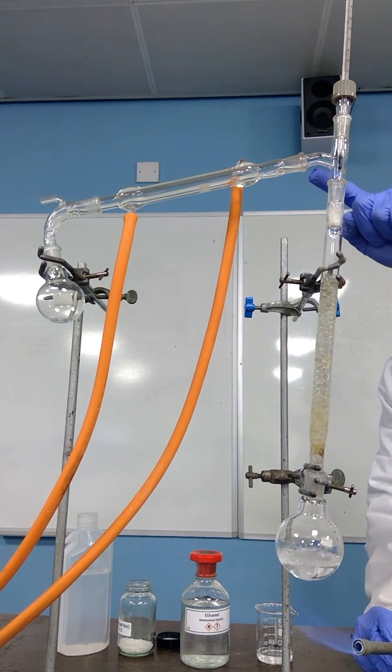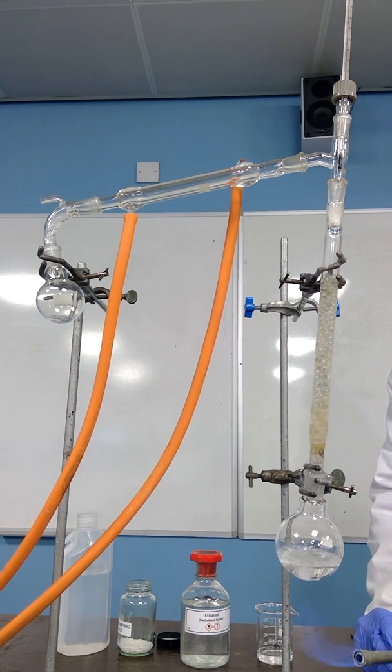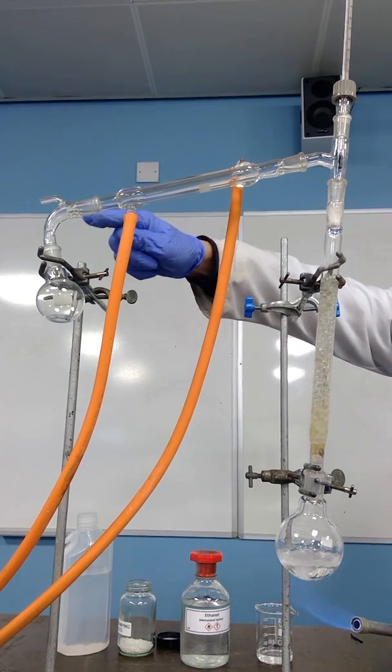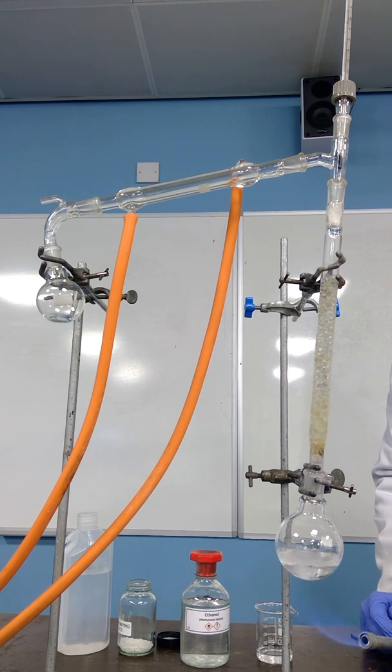Now the vapor then passes into the Liebig condenser and as it passes into the Liebig condenser it cools again because of the jacket of cold water, and so the ethanol will start to come out on the other end, and you will see quite clearly that we have collecting liquid that is condensed at the other side. We're rather hoping that that liquid that is collected on the other side is going to be pure ethanol.